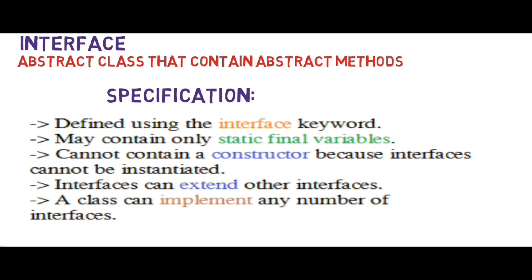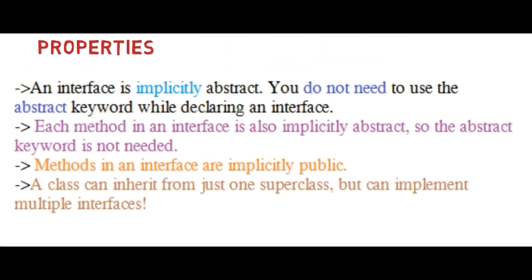It contains only static final variables and cannot contain a constructor because an interface cannot be instantiated. An interface can extend another interface, and a class can implement any number of interfaces. Let us see some properties of interfaces.